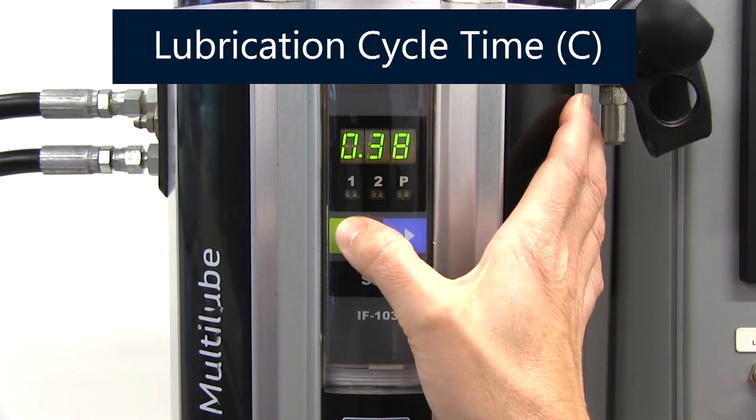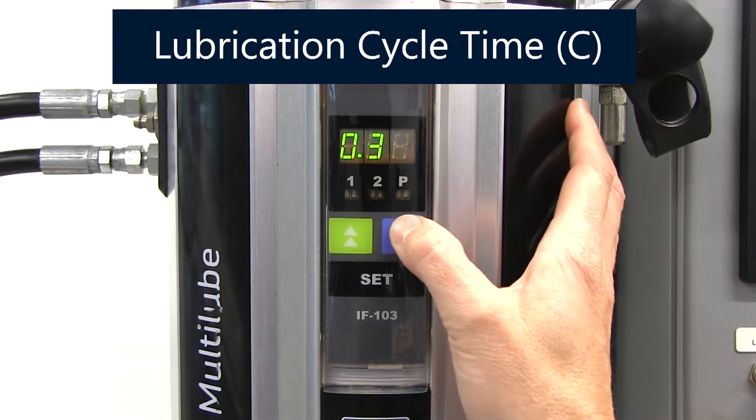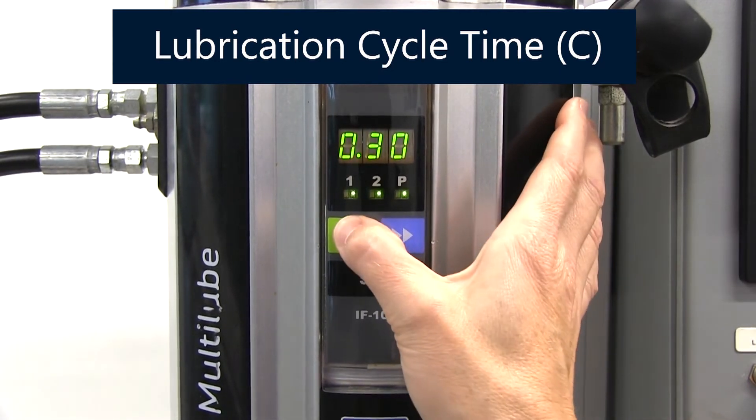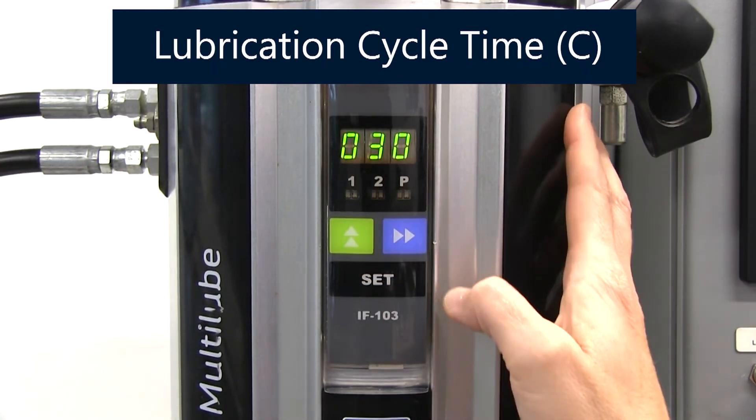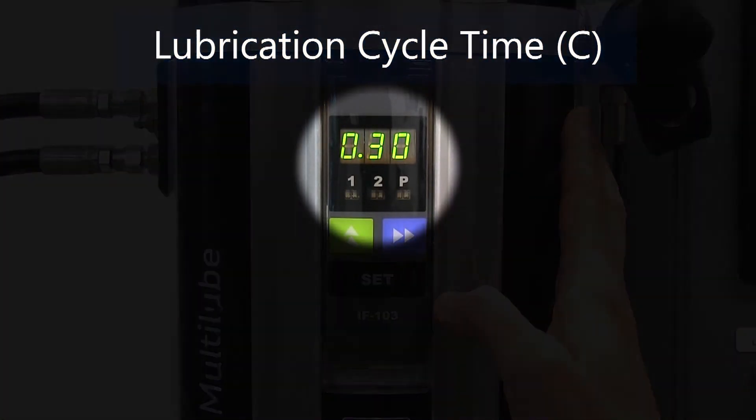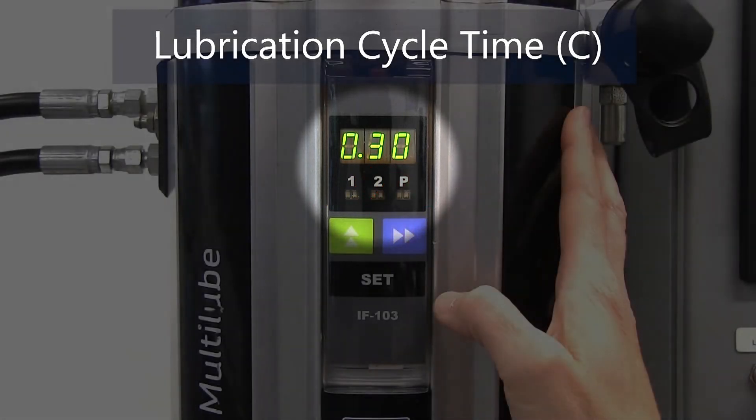Press the blue right arrow button once more after the rightmost digit is selected and use the green up button to adjust the decimal location. In this case, we are setting lubrication cycle to 30 minutes, so we want 0 decimal 3 0 to indicate 0 hours and 30 minutes.